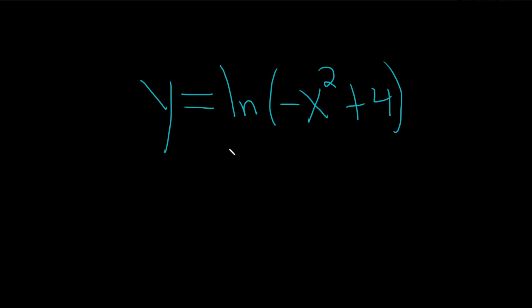Hi everyone, in this problem we have to find the domain of the natural log of negative x squared plus 4. So you can only take the natural log of positive numbers, and so the domain is just the set of all numbers that you plug into this that makes sense.